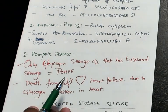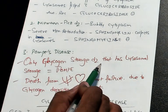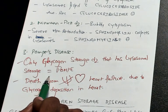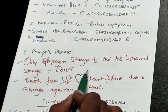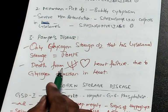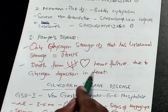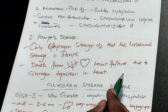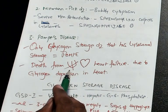Pompe disease — its specialty is that it is the only glycogen storage disorder that has lysosomal storage. That is the specialty. Why does death happen in Pompe, doctor? Because of heart failure. In Pompe, glycogen gets deposited in the lysosomes of the heart cells. That is the reason heart failure is the cause of death in Pompe disease.